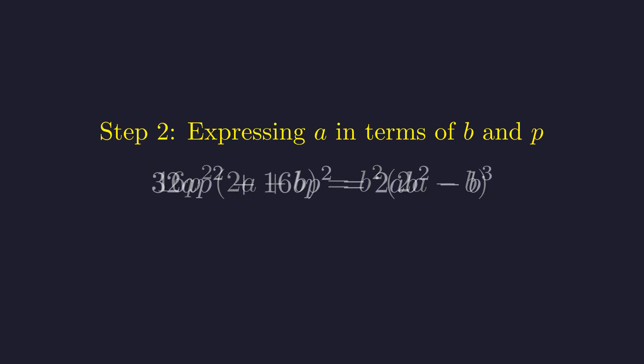Distributing gives us 32ap squared plus 16bp squared on the left and 2ab squared minus b cubed on the right. I want to collect all the terms with a on one side, everything else on the other. Rearranging like this sets us up nicely for factoring. On the left, we can factor out 2a. Nice and clean on the left.